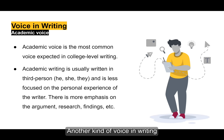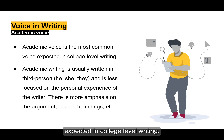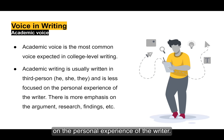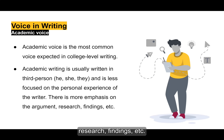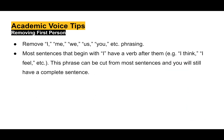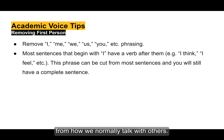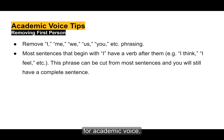Another kind of voice in writing is academic voice. Academic voice is the most common voice expected in college-level writing. Academic writing is usually written in third person — he, she, they — and is less focused on the personal experience of the writer. There is more emphasis on the argument, research, findings, etc. Because academic voice is most common in college writing and also the furthest from how we normally talk with others, let's cover some tips for revising or editing for academic voice.